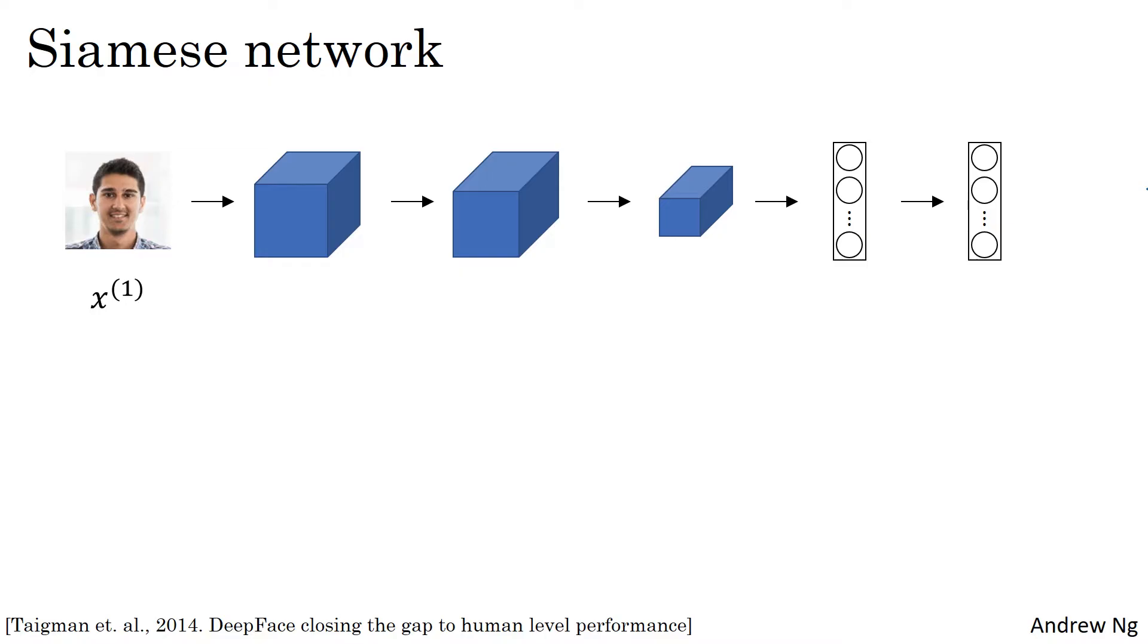You're used to seeing pictures of ConvNets like these, where you input an image, let's say x1, and through a sequence of convolutional and pooling and fully connected layers, end up with a feature vector like that. And sometimes this is fed to a softmax unit to make a classification, but we're not going to use that in this video.